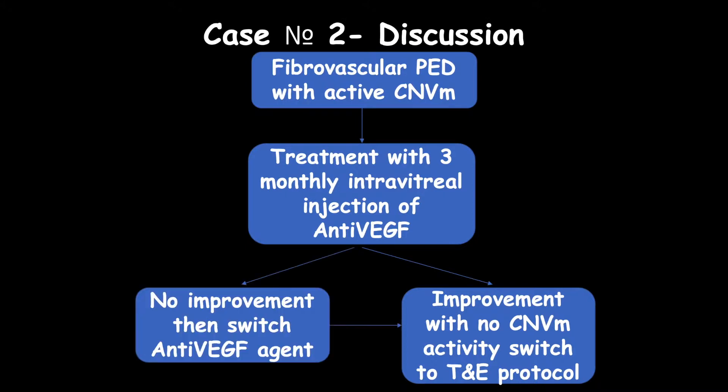If no improvement is noted, then the anti-VEGF agent should be changed. However, VEGF trap agents have a better response in cases of PED than anti-VEGF agents. Occult choroidal neovascular membrane has a better visual prognosis than classical neovascularization and intra-retinal cysts, which both have worse prognosis due to subretinal scar formation and intra-retinal tissue disorganization.